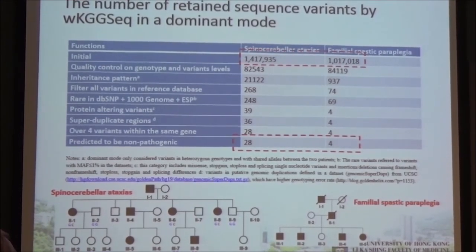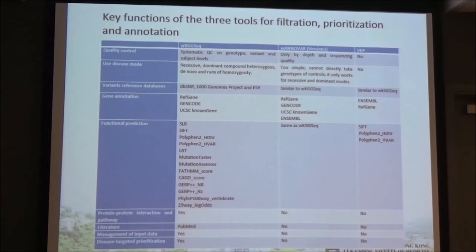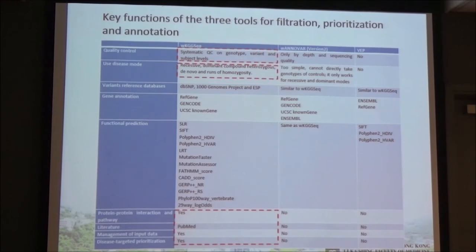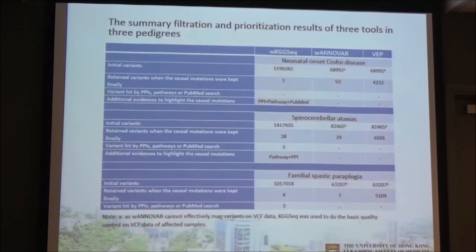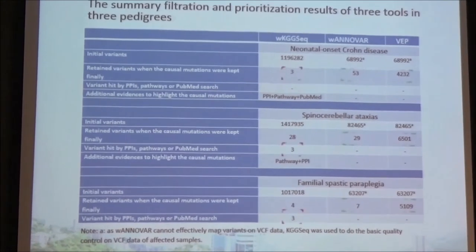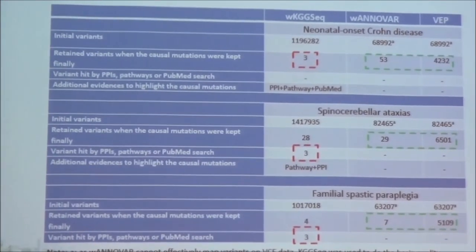Compared to Annovar and VEP, WKTG-seq has more functions for quality control, disease-inheritance-based filtration, and knowledge-based prioritization. This may be the reason why WKTG-seq produced a shorter list than Annovar and VEP in these three pedigrees.